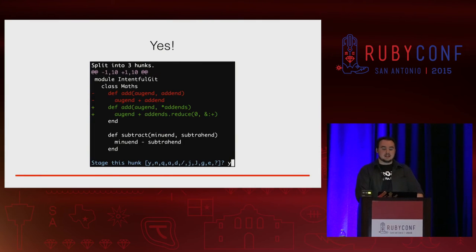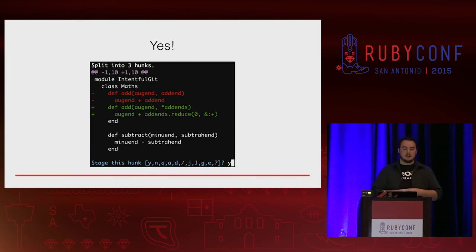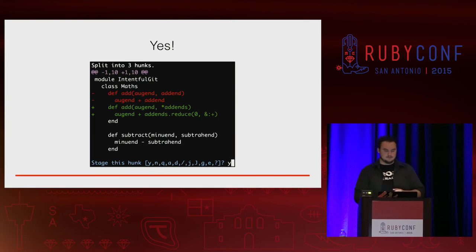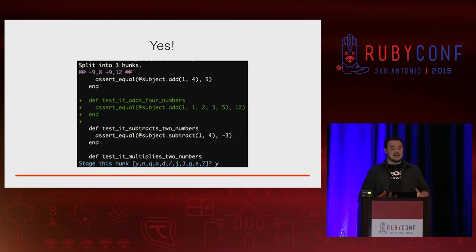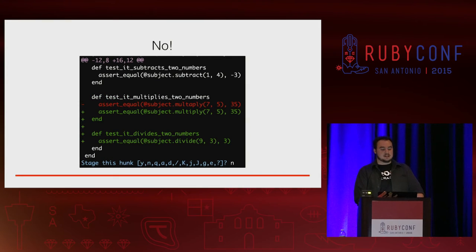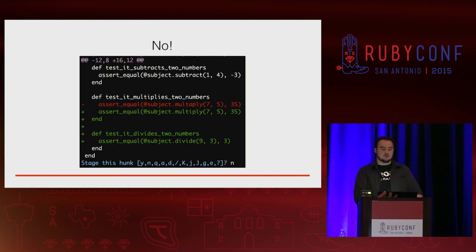Once I run split, it's going to break it up into a smaller hunk. Now it's looking at this particular part and asking, do I want to add this? Yes, I do. So I say yes. The rest of it I don't want added, so I say no to the remaining hunk. Then when I go to the test file, I do the same thing — I say yes to the test for the particular hunk, but not the tests for the multiplication and division methods.